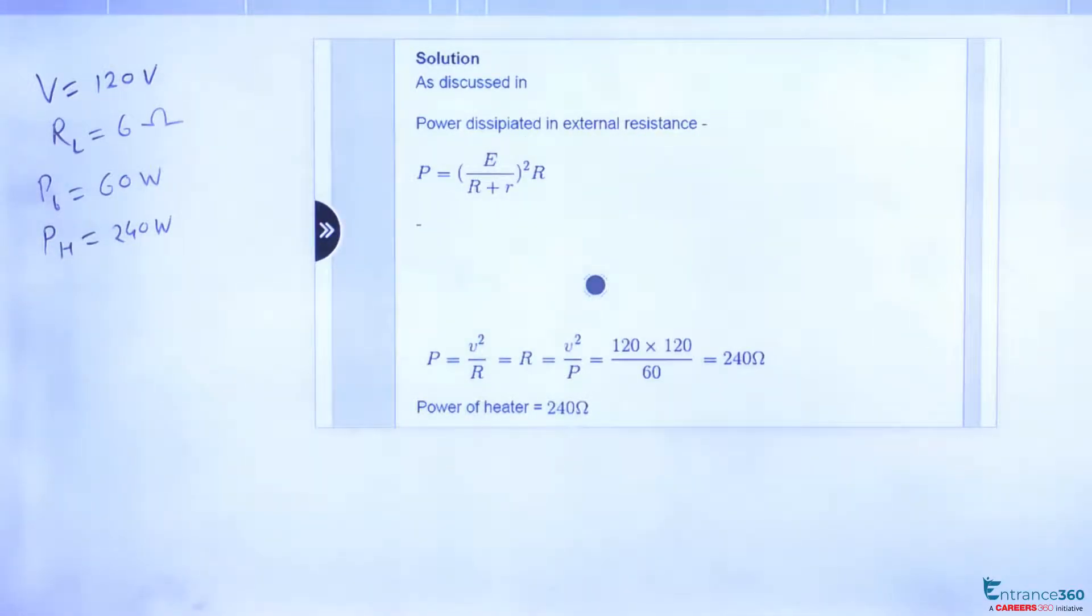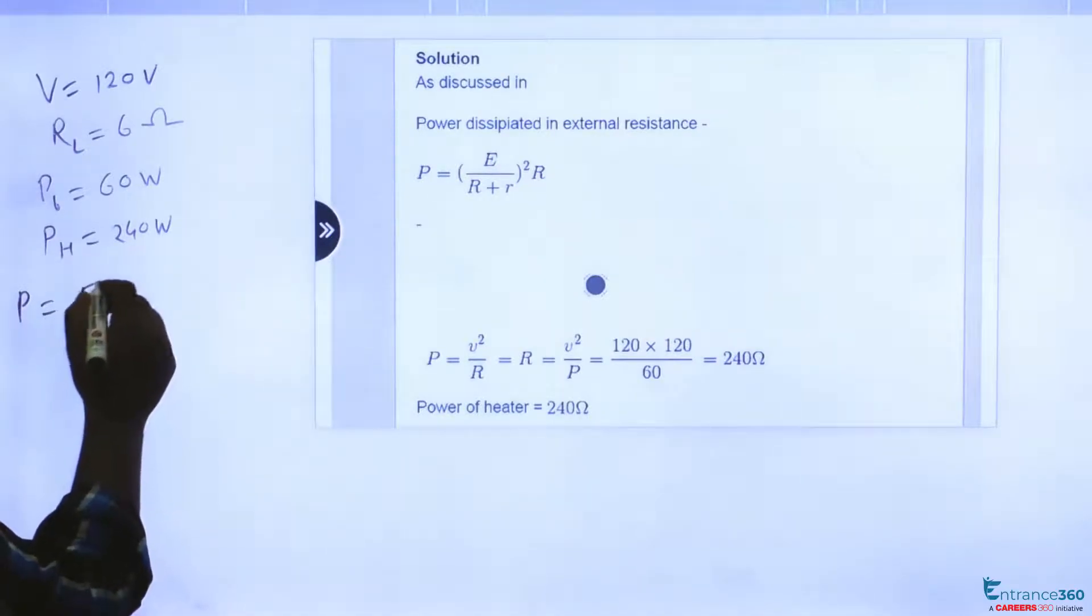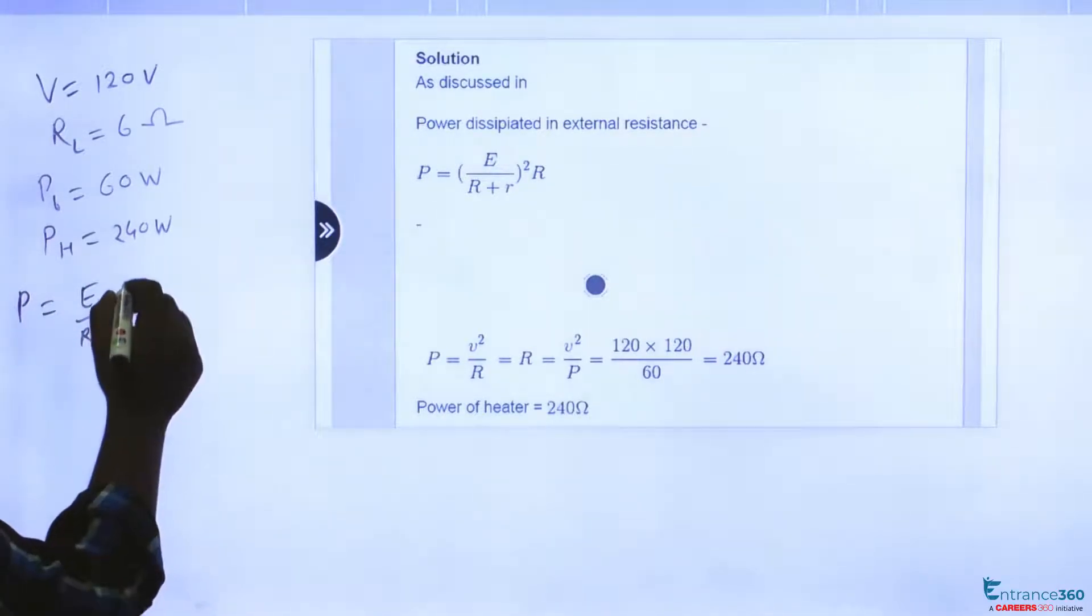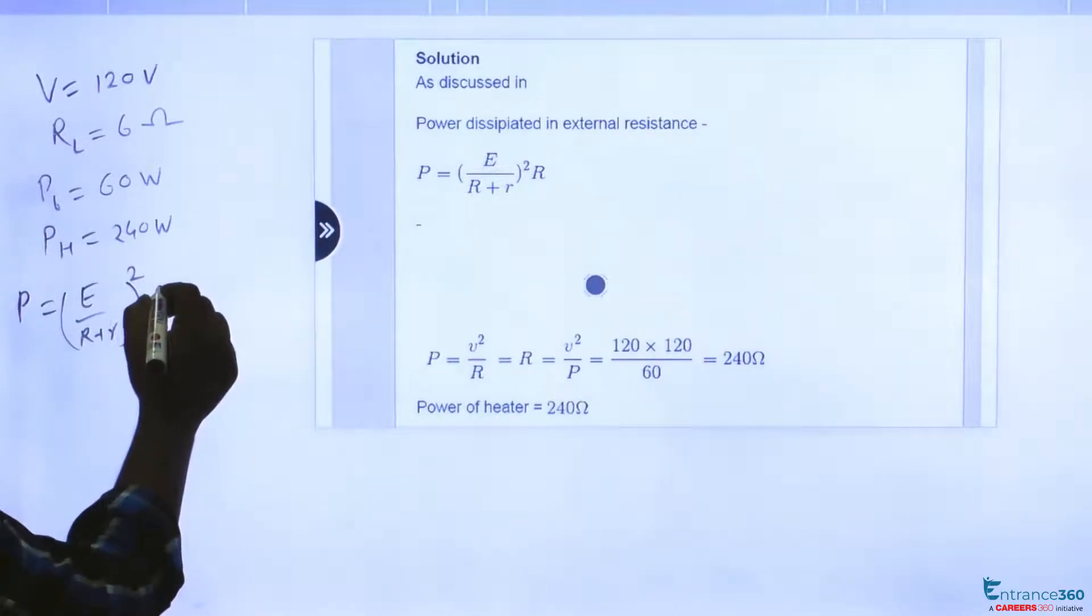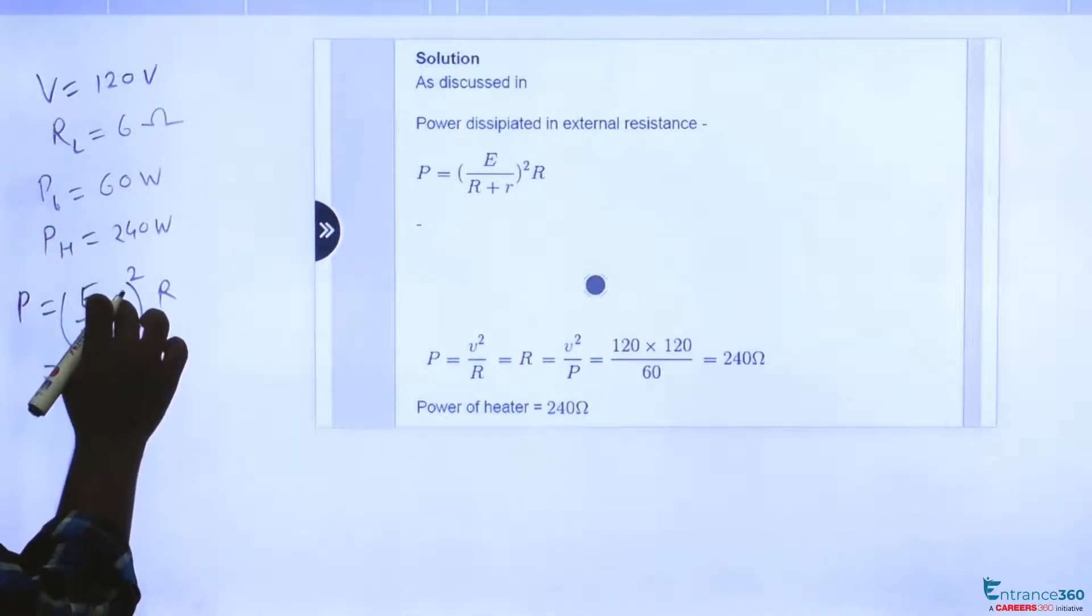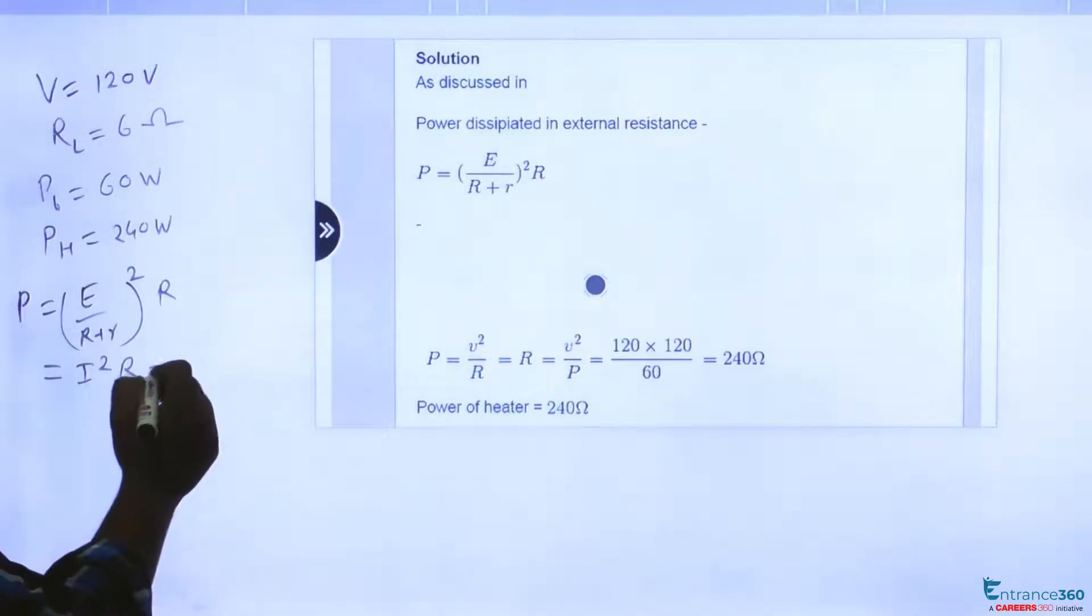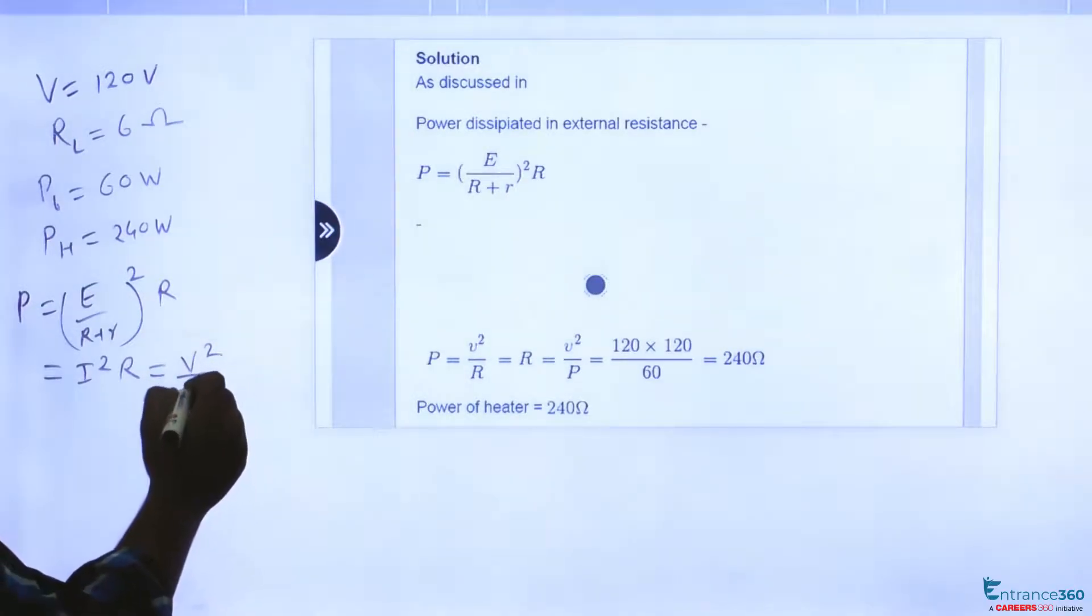To solve any question, we must understand the concept involved. The concept here is the power dissipated in external resistance. So power is given as P equal to E squared upon R plus r squared into R, or this is actually current, so can be written as I squared into R or can be written as V squared by R.